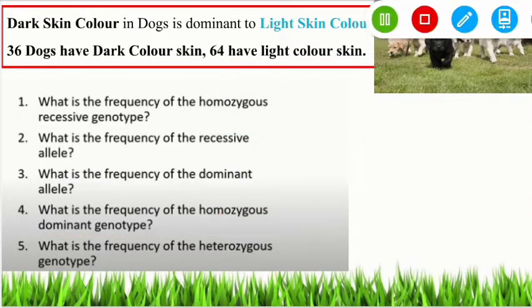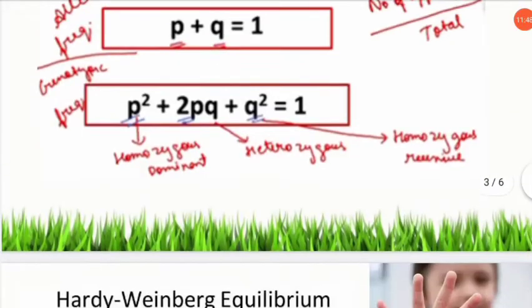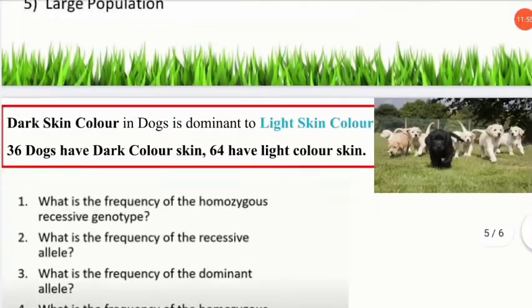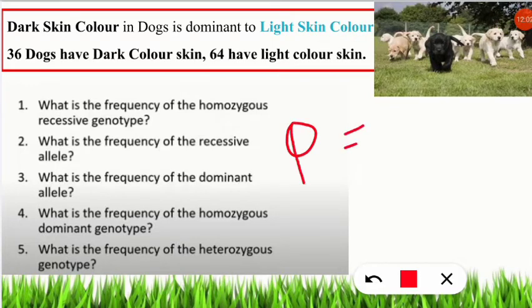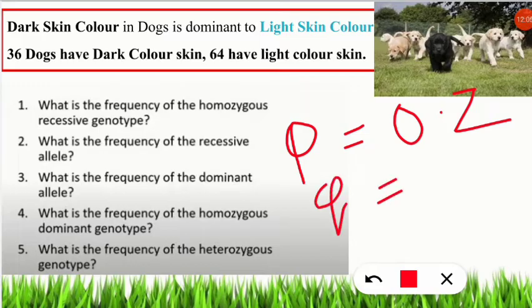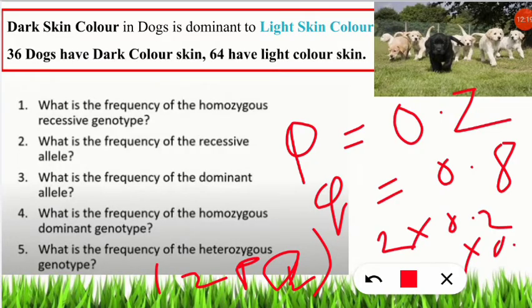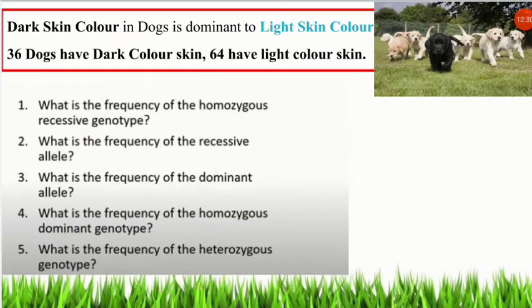Question 5: What is the frequency of the heterozygous genotype? The heterozygous genotype is represented by 2PQ. We have P = 0.2 and Q = 0.8, so 2PQ = 2 × 0.2 × 0.8 = 0.32. The frequency of the heterozygous genotype is 0.32. In this way, we solved five questions from a single set of data using the Hardy-Weinberg equation.